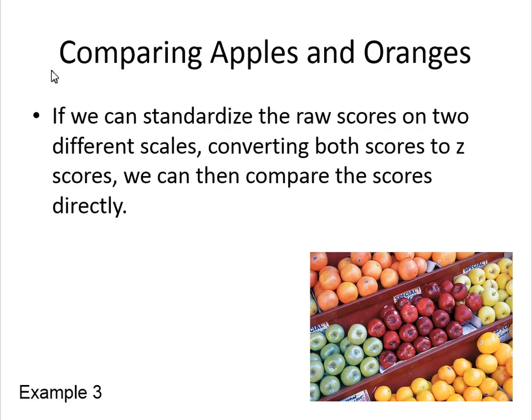This is also really popular for different IQ scales. There are several — the WAIS, the WISC which is the children's version, the Stanford-Binet. They convert everything back into IQ scores. The raw scores on those scales don't match at all, but Z-scores allow comparison.